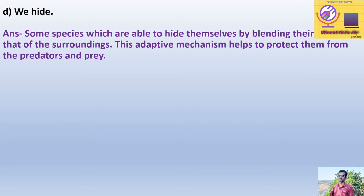Statement D: We hide. Answer: Some species are able to hide themselves by blending their color with that of their surroundings. This adaptive mechanism helps to protect them from predators and prey. That is why they hide.